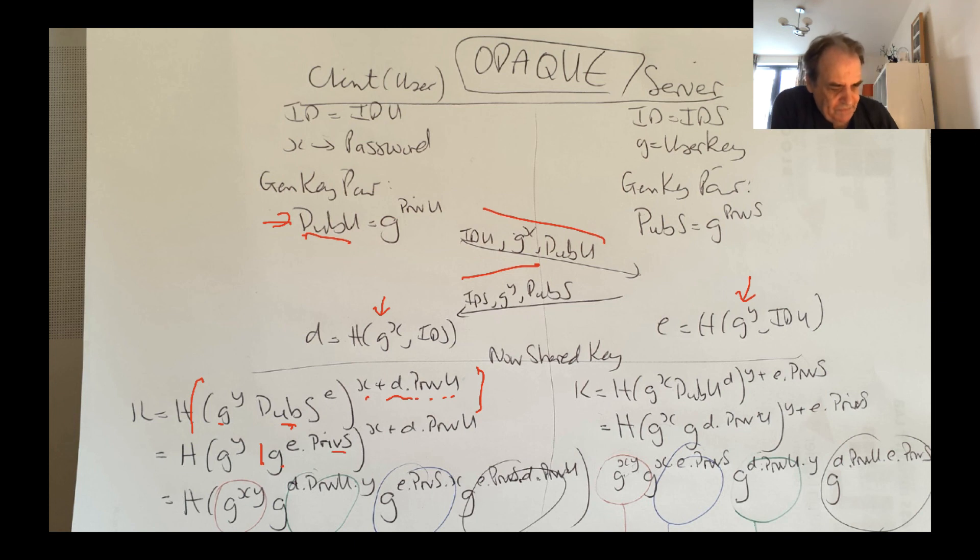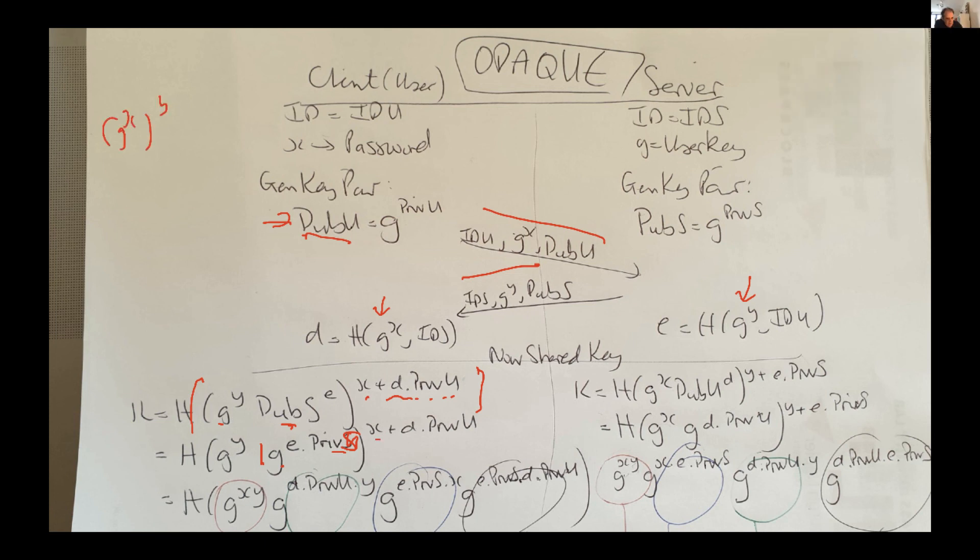Then we can then perform this substitution. So once we multiply all the sides, remember that G to the power of X to the power of Y is equal to G to the power of XY.